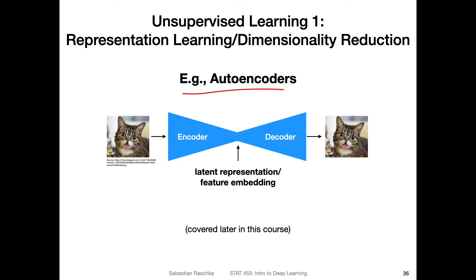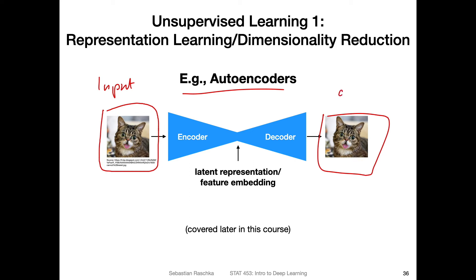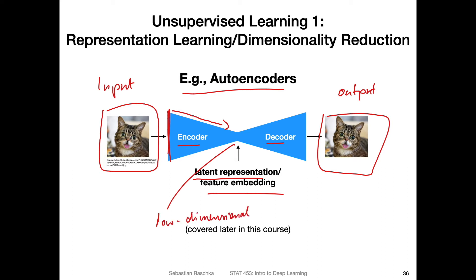Part five will cover generative deep learning. Autoencoders work like this — it's actually a very simple concept. You have input data, and then you have the output produced by the autoencoder. The autoencoder consists of two parts: an encoder and a decoder. The dimensionality of the input is very large, and then through hidden layers there is a learned representation that is smaller-dimensional. We call this the latent representation or feature embedding — it's low-dimensional, while the input is high-dimensional.